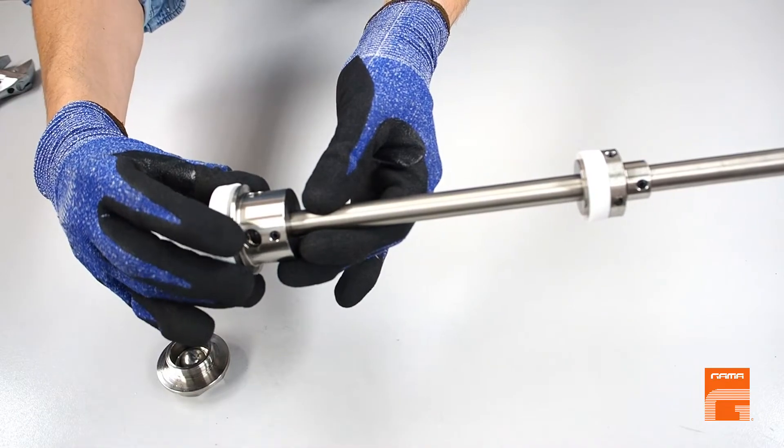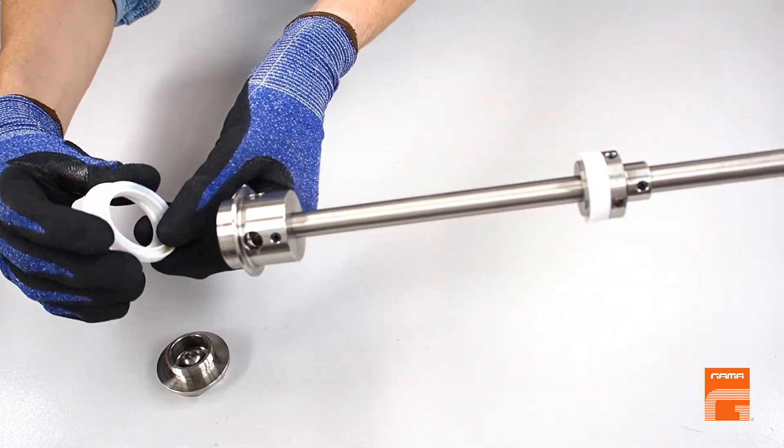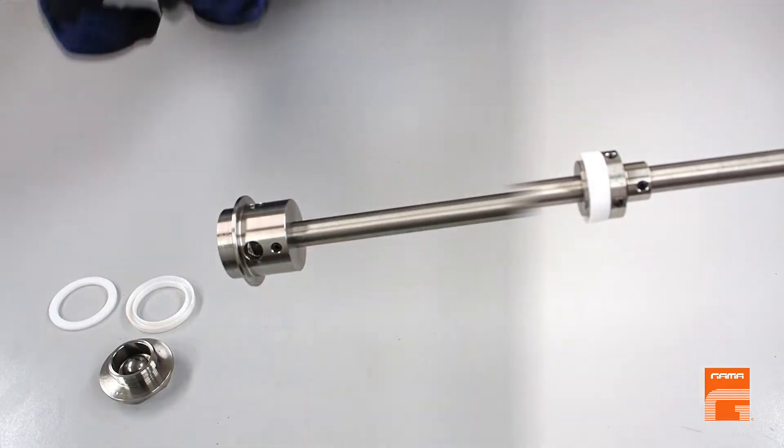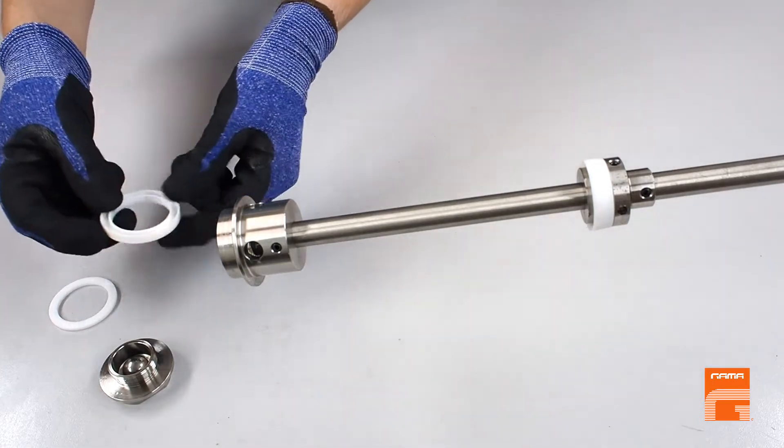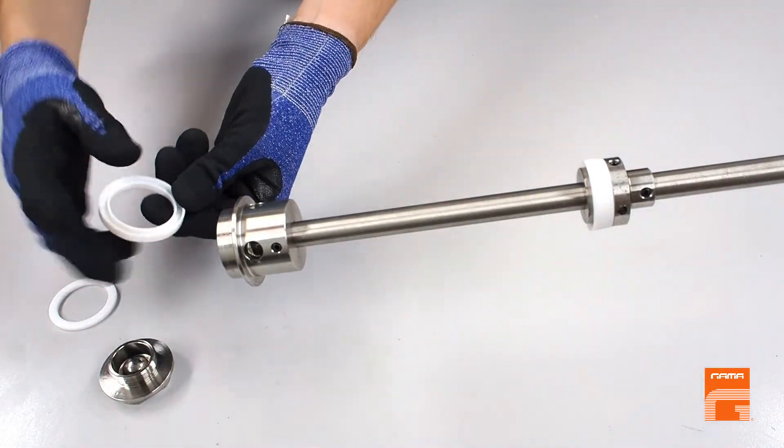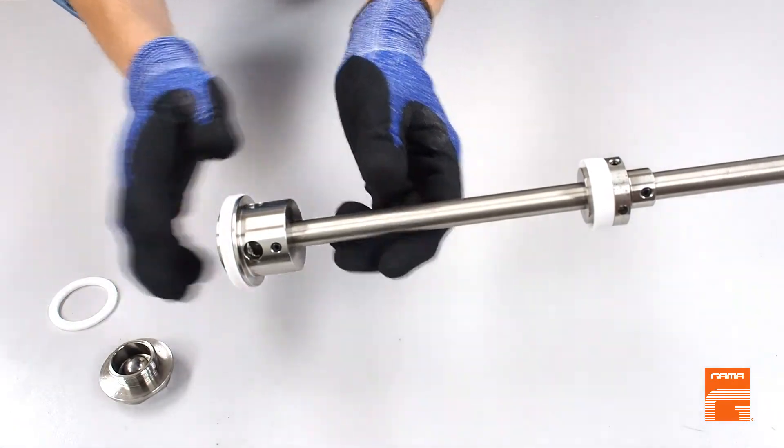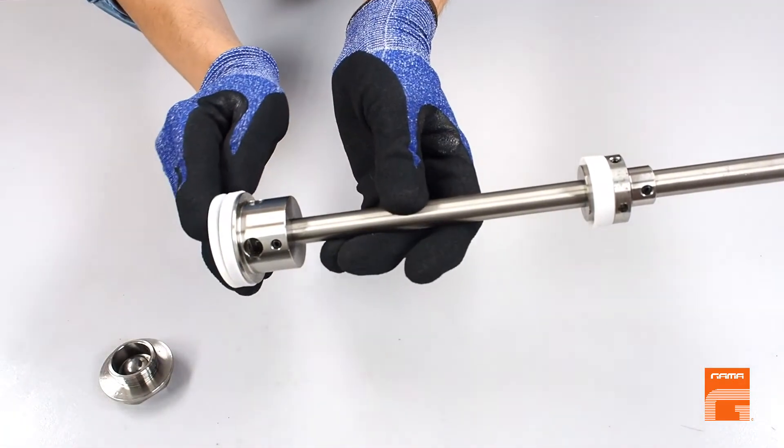Next, you can take out both seals. During installation of the new seal, be careful with the lips—they should be directed upward. Then put the ring.